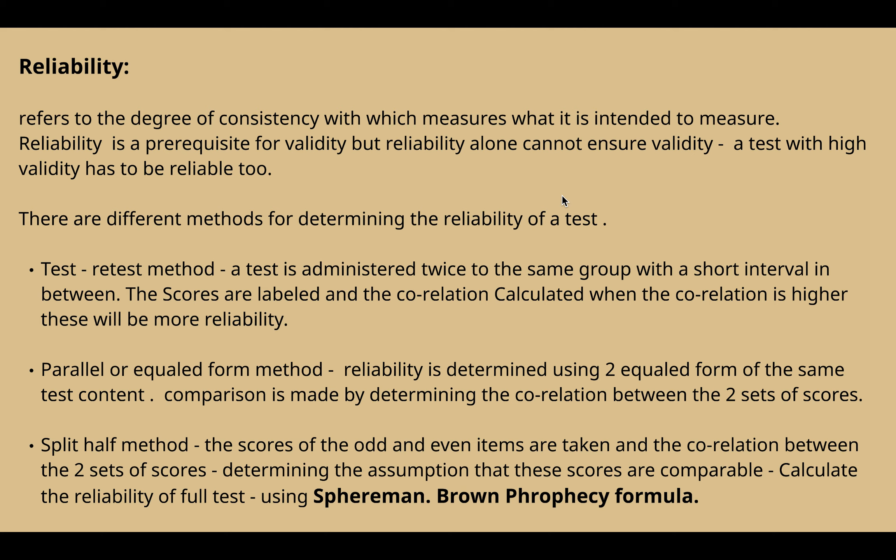In the split-half method, all test items are divided into odd and even items. For example, if we have 20 questions, items 1, 3, 5 and so on form one group and even-numbered items form another. The correlation between the two sets of scores is determined. Then the reliability of the full test is calculated using the Spearman-Brown Prophecy Formula.